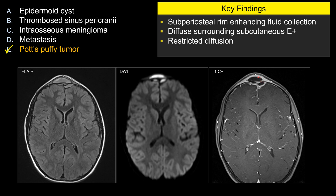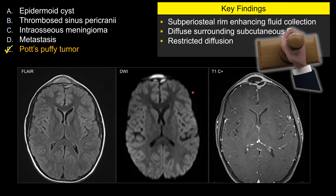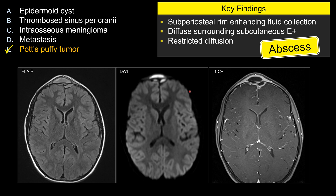A rim-enhancing collection with restricted diffusion sounds like we are describing an abscess, and that is exactly what this is. Probably the most important thing to note is that there is an epidural abscess. This fluid collection is continuous, as you can see on FLAIR, and it crosses the midline. If this were a subdural abscess, a subdural fluid collection would be stopped by the falx and extend along the falx, not cross the midline. So this is an epidural abscess.